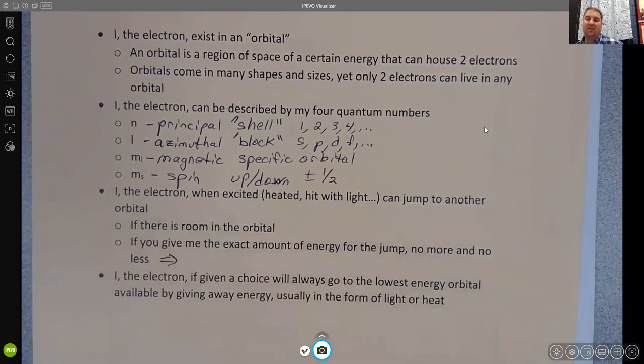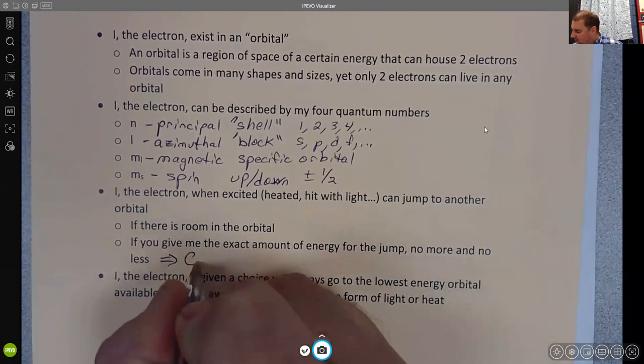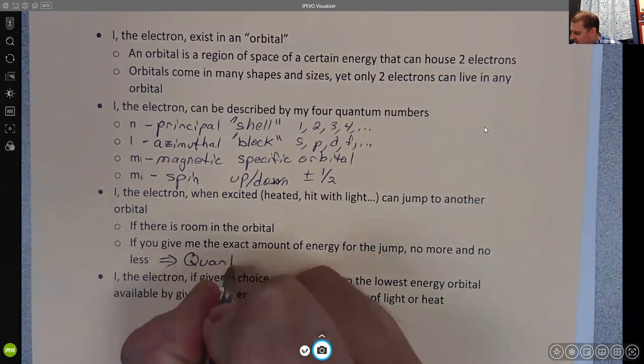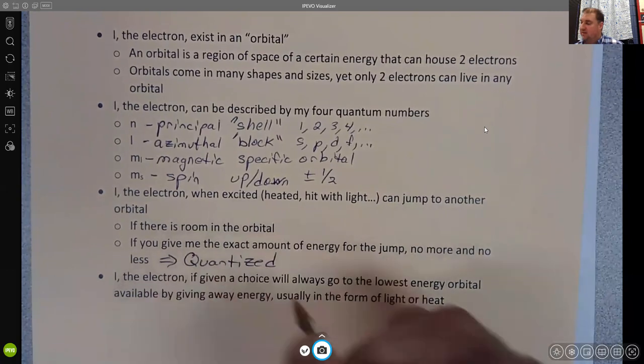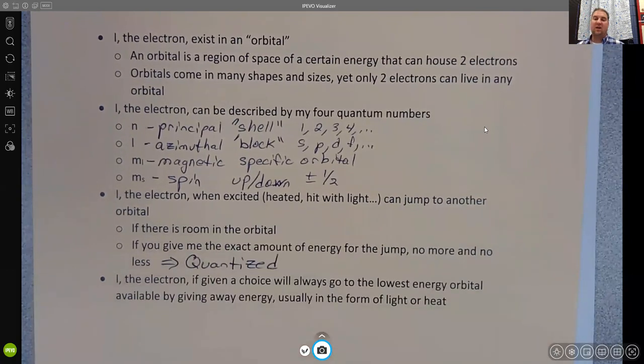And this, when you have an exact amount of energy, this is said to be quantized energy. In other words, it only comes in certain amounts. And this is really where we get the idea of the quantum nature of the electron. It comes from this idea that energy has to be quantized.